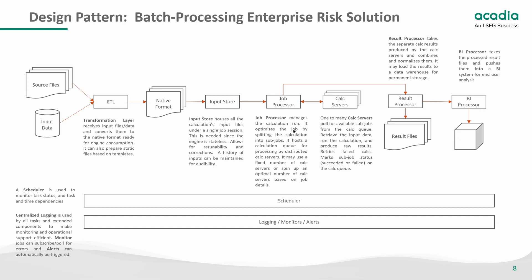The next process block in this design pattern is a job processor. It can take many approaches and vary widely between simple and complex — it's probably the place with the most variability between implementations. Here I'm taking a simple use case. Once the calculation is kicked off, the job processor manages the run. It optimizes the job by splitting the calculation into sub-jobs, hosts a calculation queue for distributing work to the calc servers, and may use a fixed number of calc servers or spin up an optimal number based on job details.